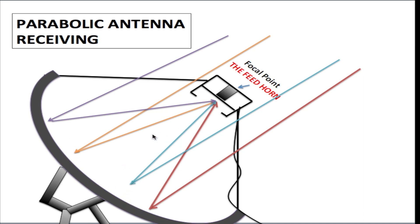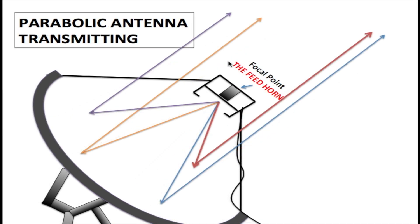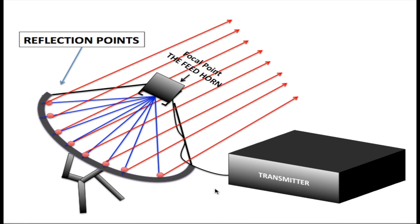Signals being transmitted are transmitted from the feed horn to the parabolic dish where they are reflected into the air. In this diagram, we have a transmitter sending a signal to the feed horn. The feed horn, as I said before, is the antenna. It will send the signal directly to the dish where it would be reflected into the air.